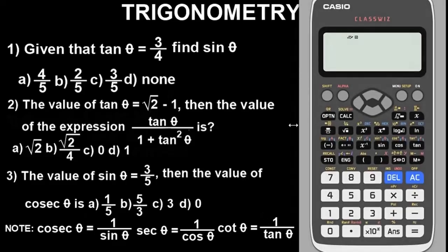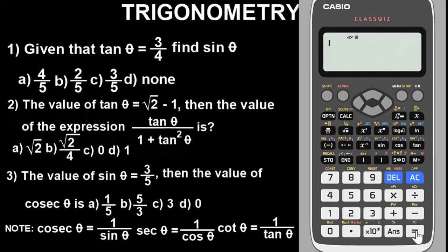Now you can see this is the Casio calculator. The very first thing you have to do is clear your calculator — very important to put it in default mode. I often say this in almost all my videos. To clear it, simply press Shift, then initialize all, press OK, then press OK again. Now the calculator has been cleared and is in default mode. The second thing you have to do is put it in radian mode, because we are working with angles.